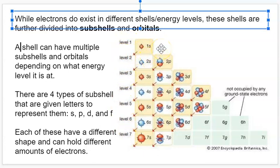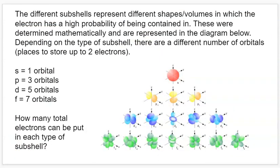We label the subshells with a number and a letter. The letter represents the shape, and the number represents which level it's at. This is all going to come together with the organization of the periodic table. The amount of electrons that could be stored at each level of the atom corresponds to the energy level that has electrons in it and which subshells are available at that energy level.